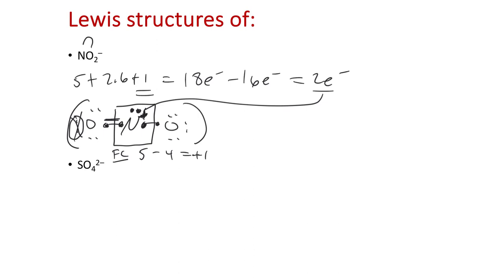The issue is, why don't I make the double bond with the other oxygen instead? Once I make the double bond, I reduce the formal charge down to zero. When I make this double bond, the formal charge becomes zero because it's now 5 minus 5, reducing the formal charge of nitrogen. When I make a double bond, I want to lower the magnitudes of the formal charge.